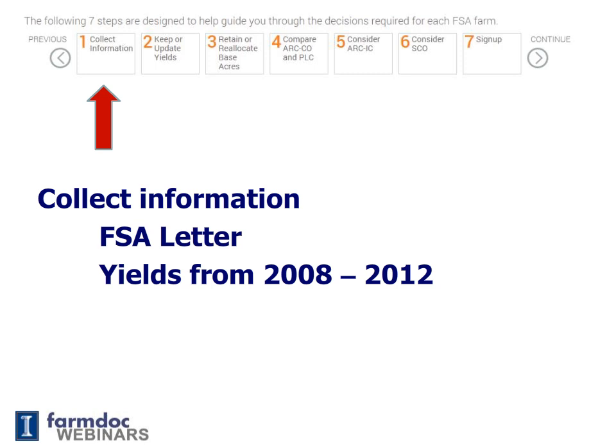The first step will tell you the information that you need to make these decisions. The information you will need is an FSA letter dated July 28th and yields from 2008 through 2012.